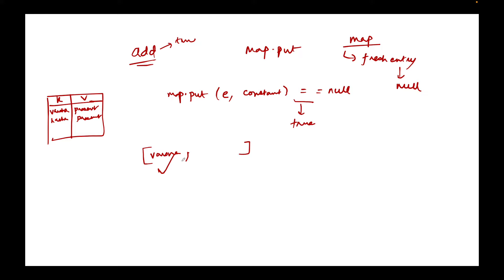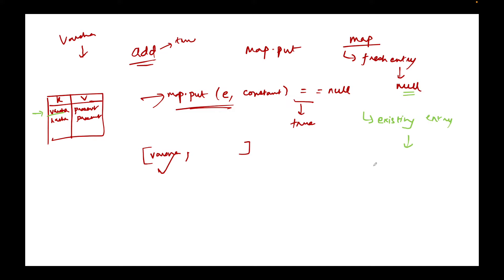Then I add another entry Harsha — that is also not present, so it gets added. Now when I try to insert Varsha again into the set, the condition runs again. This time there is already an entry in the HashMap against the key Varsha. In the case of an existing entry, map.put does not return null — it returns the older value associated with that key, which is the constant PRESENT. Is the old value equal to null? No, because I already have an entry. So this condition turns out to be false, and the add method is not done successfully — Varsha is not added again.